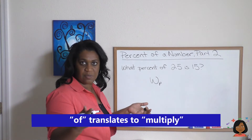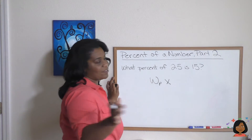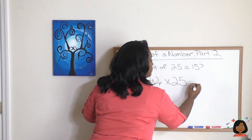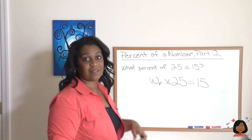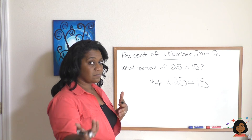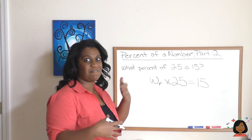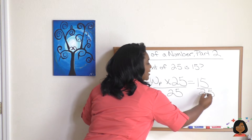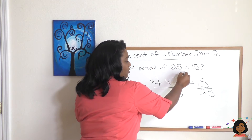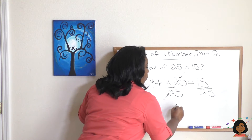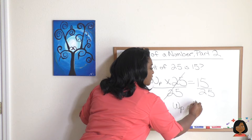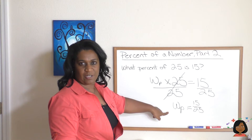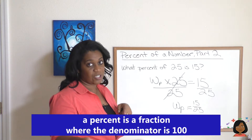"Of" in math means multiply, and 25 is already mathematical so we leave it. "Is" means equals, so we have: W × 25 = 15. Now we have our mathematical statement. This is really a missing number in multiplication, so we do the opposite — we divide to find the answer. We divide both sides by 25, which crosses out the 25, and we're left with: W percent = 15/25. We're not really at a percent yet — we're still at a fraction.